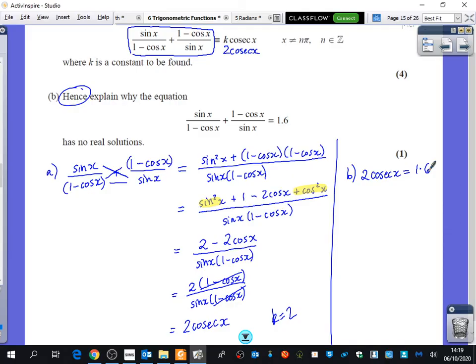And this is going to lead us on to the next topic that we're going to do. Now, if I wanted to solve this equation, I would divide by 2 so that cosec x is equal to 0.8, but I can't do the inverse of cosec x. What is cosec x? It's 1 over sine x. So 1 over sine x is 0.8. So to find out what sine x is, I do the reciprocal of both sides. What is the reciprocal of 0.8? 5 over 4. Or 1.25.